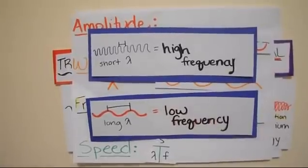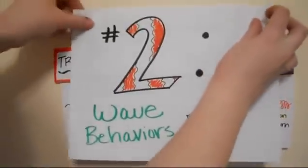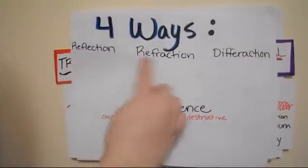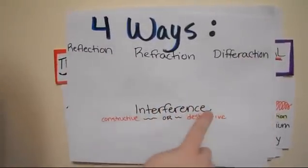Part 2, Wave Behavior. There are four types of ways waves interact with mediums and other waves: Reflection, refraction, diffraction, and interference.